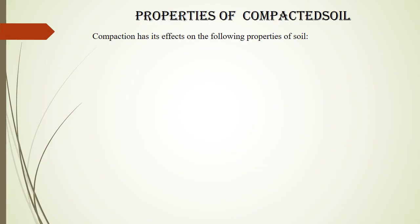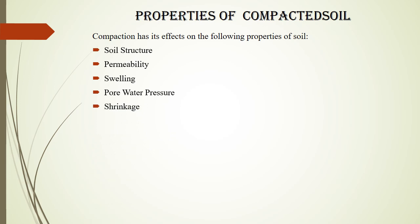Properties of compacted soil: compaction has its effects on the following properties of soil. First is soil structure, second is permeability, third is swelling, fourth is pore water pressure, fifth is shrinkage, sixth is compressibility, seventh is stress-strain relationship, and eighth is shear strength. Compaction may affect soil structure, permeability, swelling, shrinkage, pore water pressure, compressibility, stress-strain relationship, and shear strength of soil.